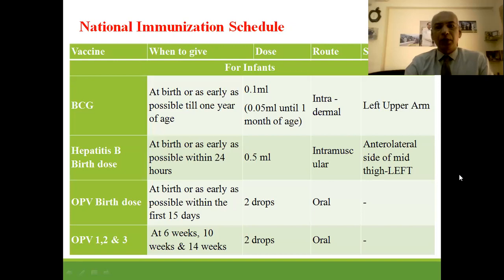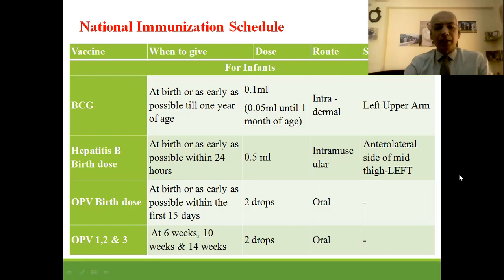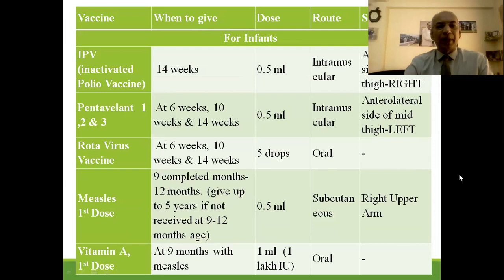National immunization schedule: BCG is given at birth or as early as possible — dose is 0.1 ml in infants, or 0.05 ml in neonates below one month, given intradermally on the left upper arm. Hepatitis B birth dose is given within 24 hours of birth — 0.5 ml intramuscularly on the left mid-thigh. OPV at birth is given within 15 days, 2 drops orally, and repeated at 6, 10, and 14 weeks. IPV (inactivated polio vaccine) is given at 14 weeks, 0.5 ml intramuscularly on the right thigh.